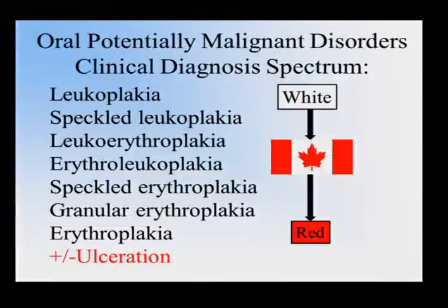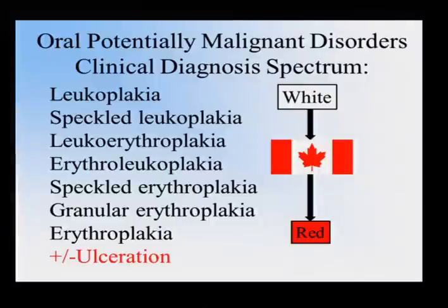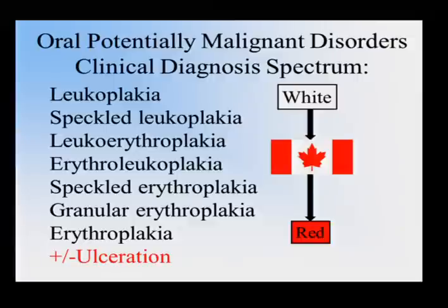We all have a sort of semantics about the nomenclature we use to describe what we see clinically. We use the term leukoplakia — which is a white patch that doesn't wipe off and you can't explain why it's there — and therefore it initiates a diagnostic algorithm to rule out pre-malignant changes or possibly malignancy. As you go through that spectrum of different clinical appearances, it goes from white to mixed red and white. I always like to show the Canadian flag because it's a good way of remembering that's a high-risk lesion. Then moving on to red — the erythroplakia.